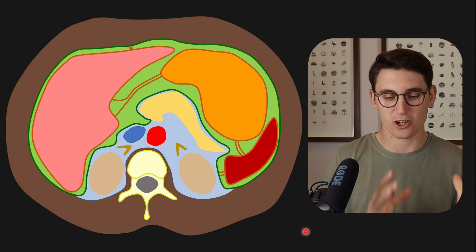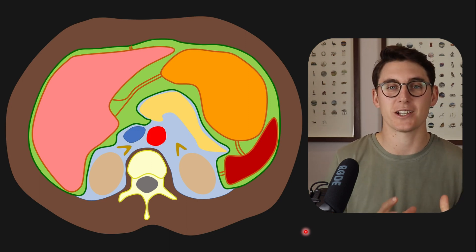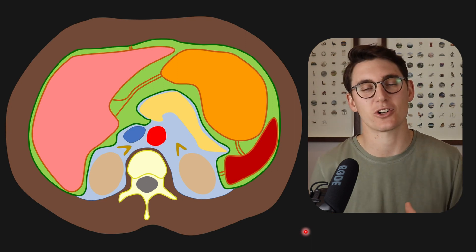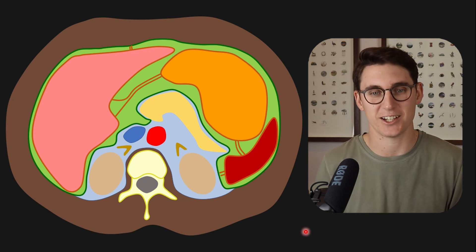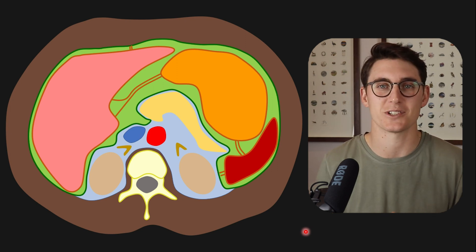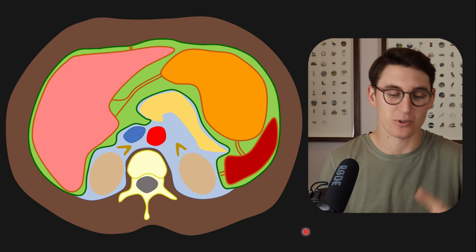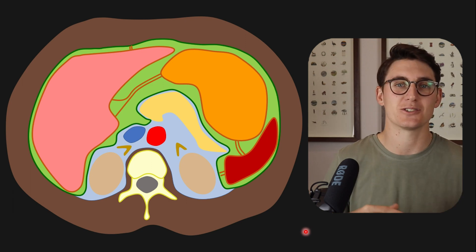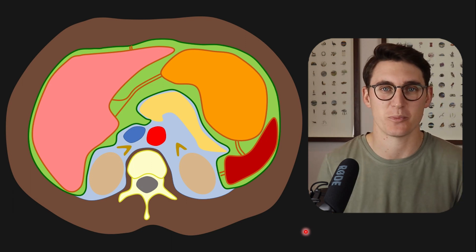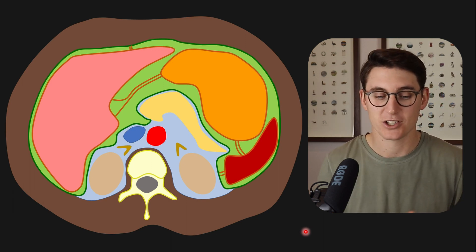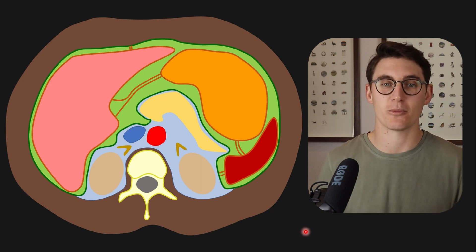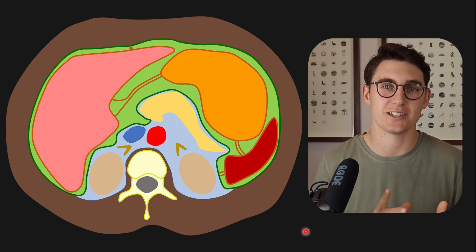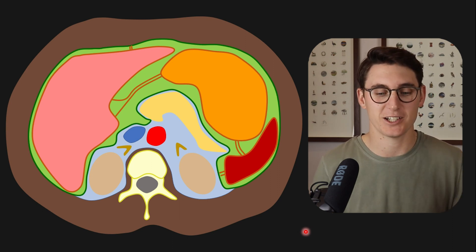Let's start by having a look at the schematic and identifying the organs, then go across to a CT scan and look at those organs there. Then we'll come back to the schematic and I'll show you how to divide the retroperitoneum. If you haven't looked at the peritoneal talk, I'm going to link it above.